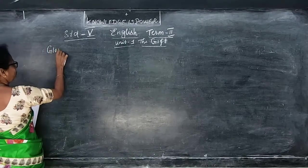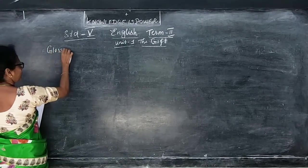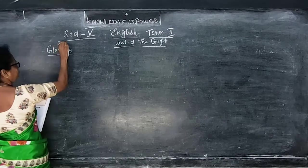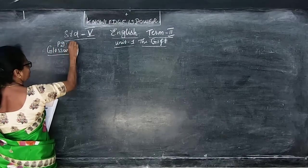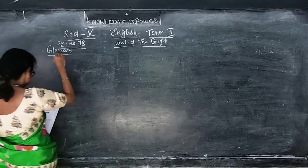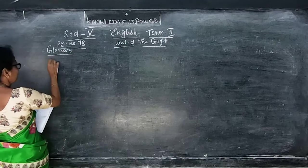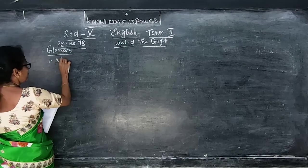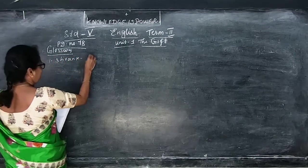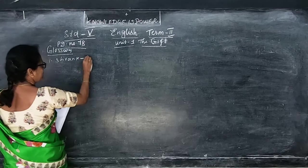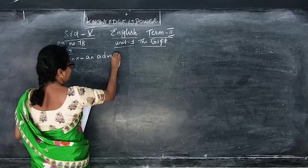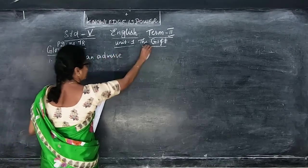The glossary is in your book. See page number 78. Learn this, children. First one is 'shrank.' Shrank means an adverse reaction.